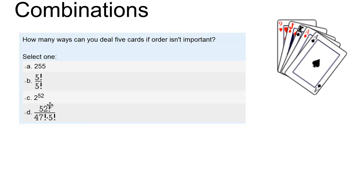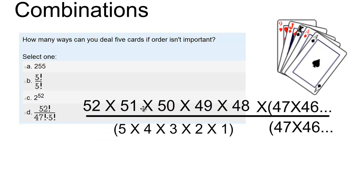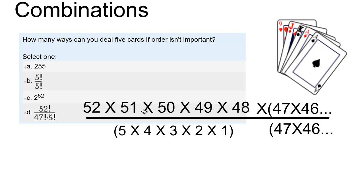And the answer is 52 factorial over 47 factorial divided by 5 factorial. And the reason is that is equivalent to this expression.